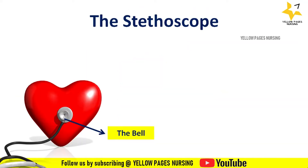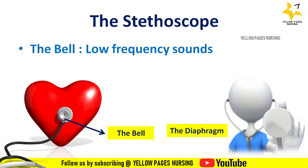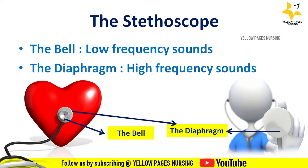Heart sounds are auscultated using a stethoscope. The parts of the stethoscope include the bell and the diaphragm. The bell is used to hear low-pitched sounds, whereas the diaphragm is used to hear high-pitched sounds. Normal heart sounds come in pairs.